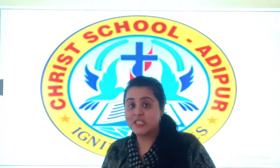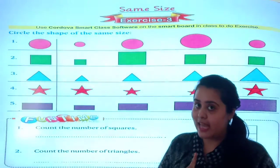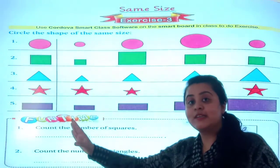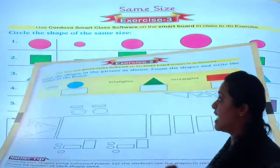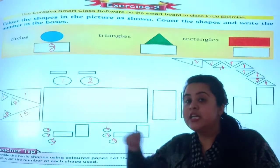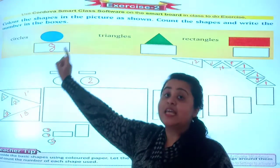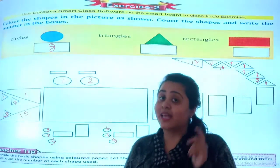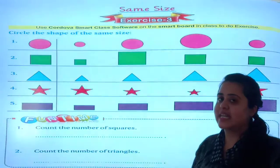So students, remember in the previous video we have solved our Exercise 3. From this exercise, we have seen the matching of the partners. And in Exercise 2, we have also colored it and counted. We counted that the circle is total 8.